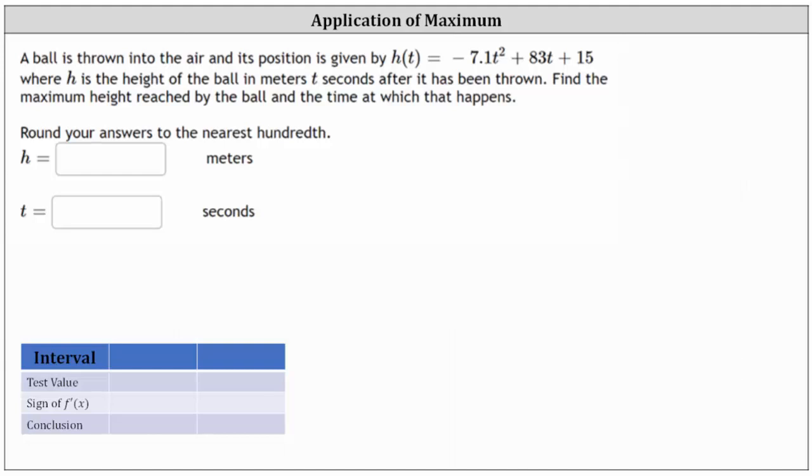A ball is thrown into the air and its position is given by h of t, where h is the height of the ball in meters t seconds after it is thrown. We need to find the maximum height reached by the ball and the time at which that happens.